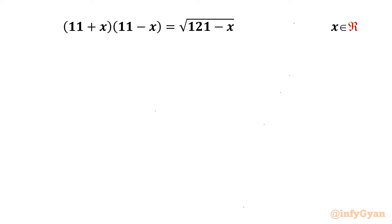Welcome back to Infigyan, my dear friends. Today in this video we are going to take up one very interesting and challenging question from Radical Equations. The given equation is (11 + x)(11 − x) = √(121 − x). We have to find out the real solutions.